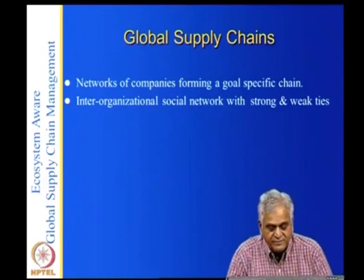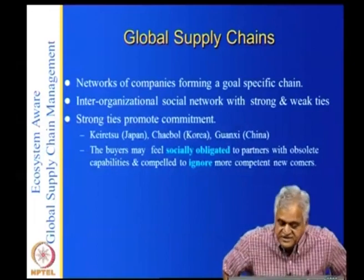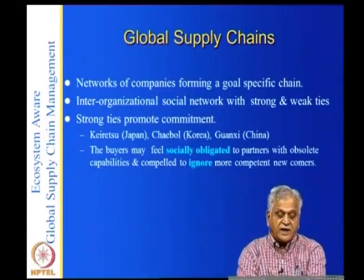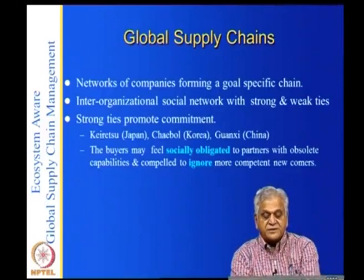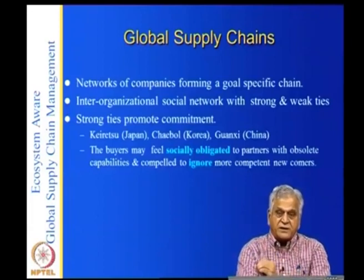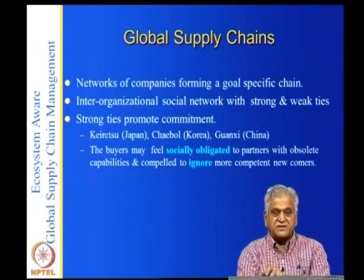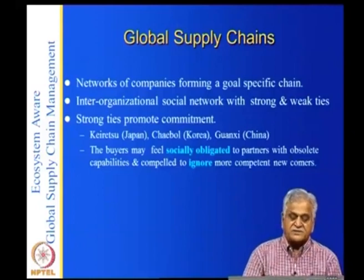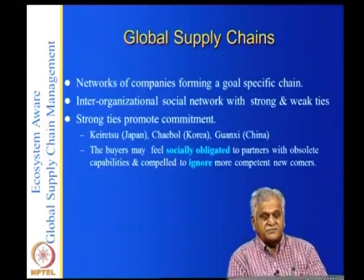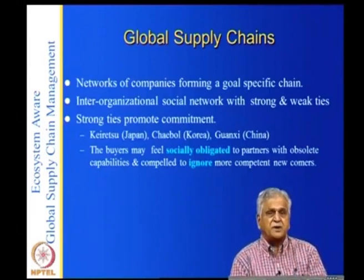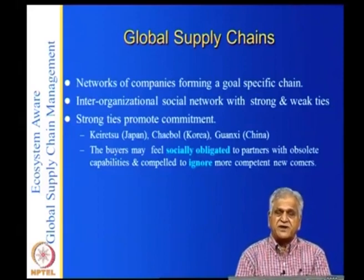In global networks, companies form inter-organization social networks with either strong or weak ties. Strong ties — as in Keiretsu, Chaebol, and Donkstein models — mean the supplier and manufacturer or distributor and manufacturer have very close ties: the manufacturer invests in the supplier, provides intellectual property, and supplier personnel are present in manufacturing to understand requirements. This creates long-standing relationships where trust builds up and there is no theft of intellectual property.